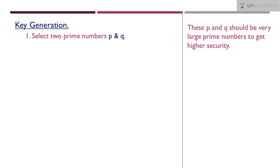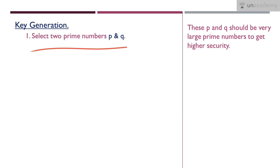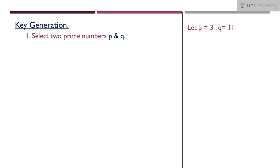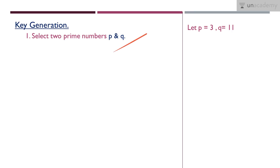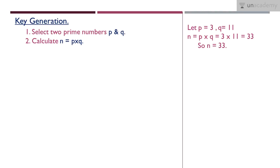The first step in key generation is to select two prime numbers P and Q. P and Q should be very large prime numbers for higher security — as the values of P and Q get larger, security also gets higher. In this example I'm using small values so that the calculations become easier. I'm choosing P equal to 3 and Q equal to 11, both prime numbers.